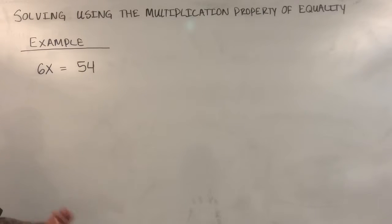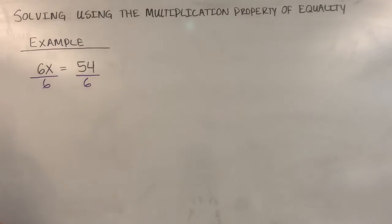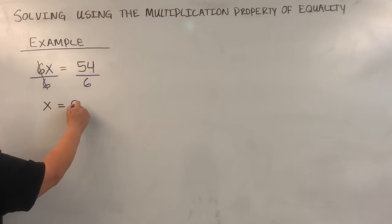So to get rid of multiplication, we use the opposite, which is division. We're going to divide both sides of this equation by 6. Now remember, we have to do it to both sides, otherwise it's not going to balance out. Here on this side, the 6s will cancel out, and I'm left with x. And on this side, I have 54 divided by 6, which is 9.